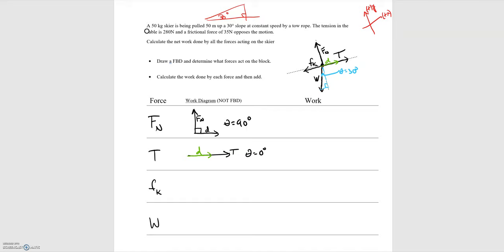For kinetic friction: displacement is in the positive x direction, and kinetic friction is in the negative x direction — they're opposite. So the angle between F sub k and D is theta equals 180 degrees.